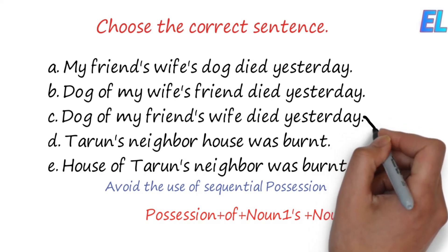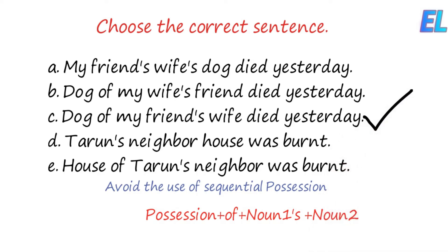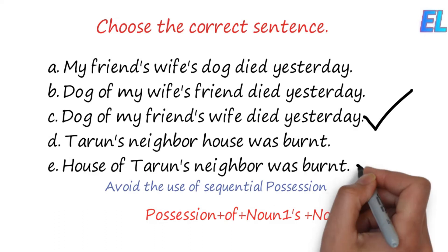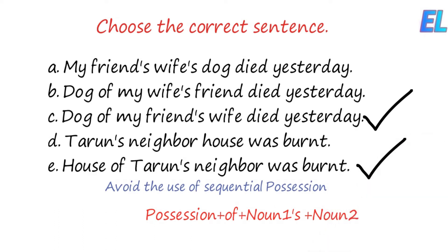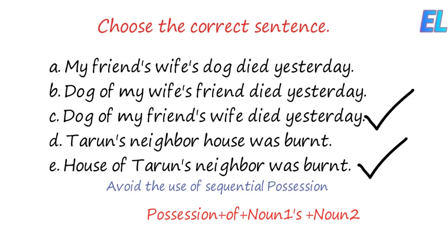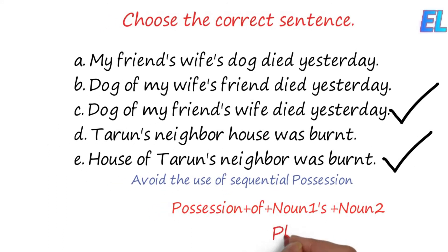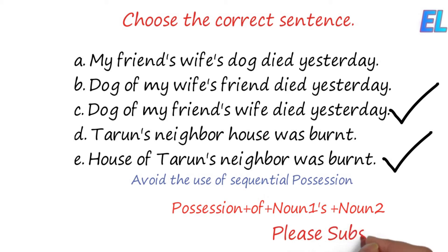Follow this sentence. Dog of my friend's wife died yesterday. House of Dorun's neighbor was burnt. Double or triple possession means sequential possession, and we have to follow these rules.